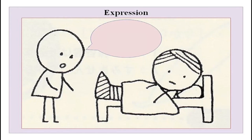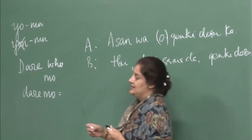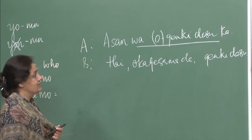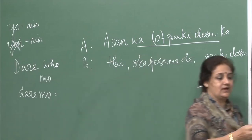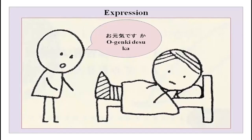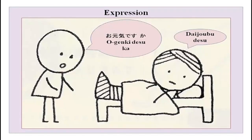As we did with o namae — o namae wa nan desu ka, watashi no namae wa... — o is not to be used for oneself. O genki desu ka can also be used when someone is sick or injured, meaning 'are you alright now? How are you feeling?' The answer could be daijobu desu, which is another phrase meaning 'I am alright, I am okay.' These are different situations where you can use these phrases.